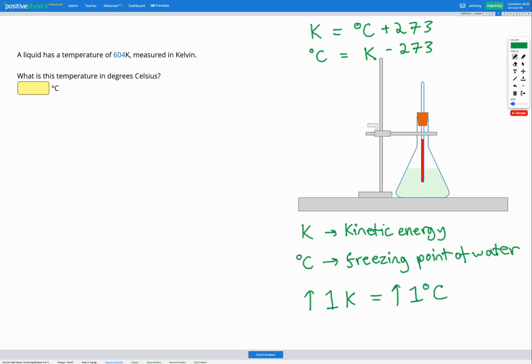So that's the conversion we're going to do. So in this question, a liquid has a temperature of 604 Kelvin. We're trying to find the temperature in degrees Celsius.